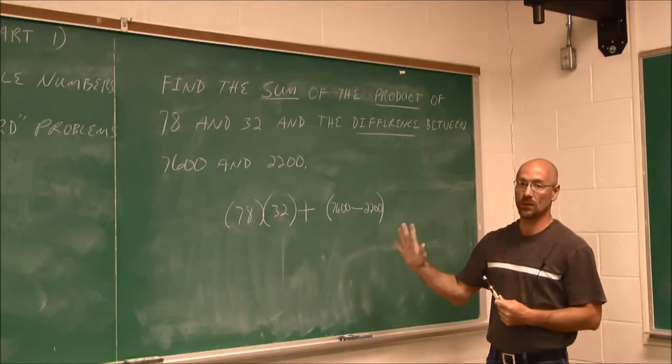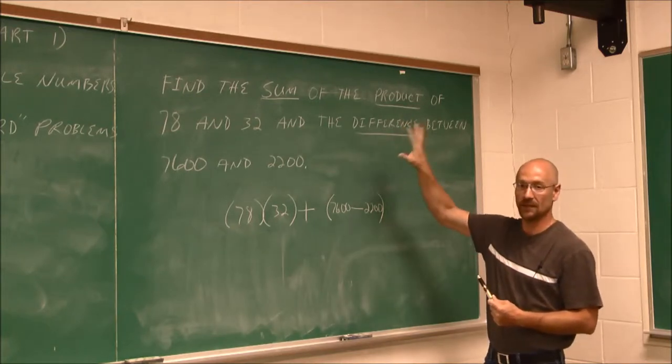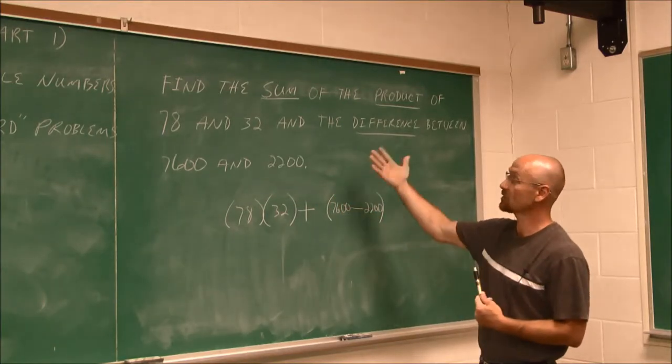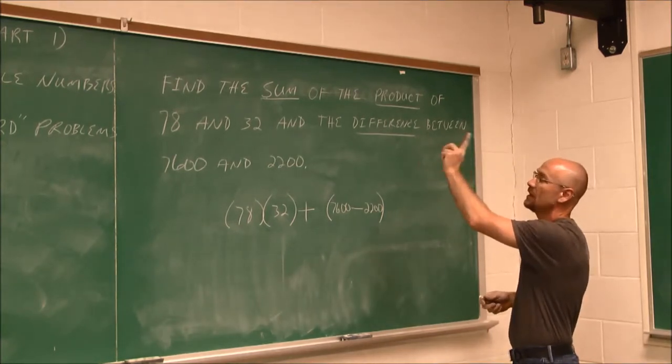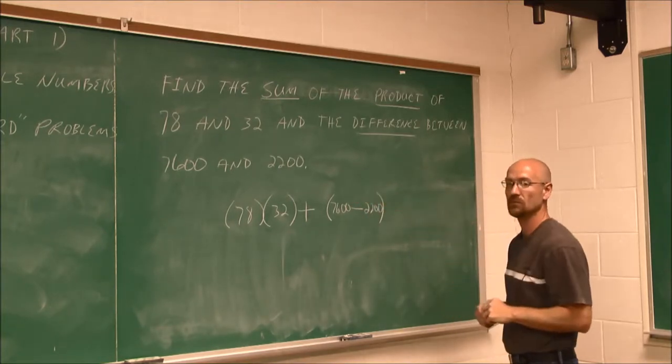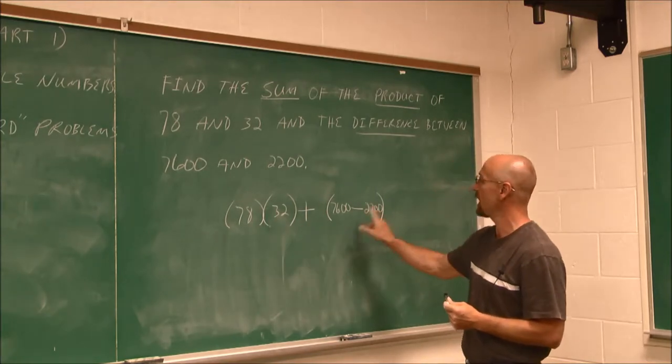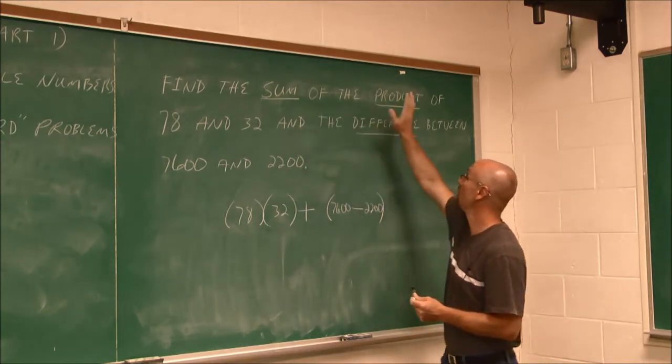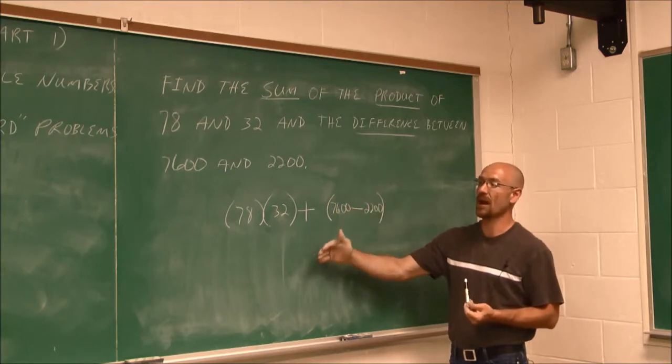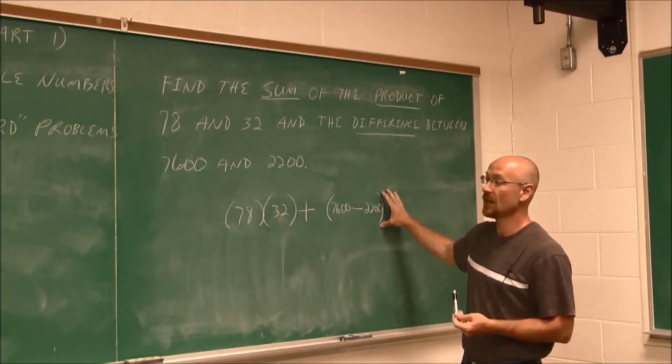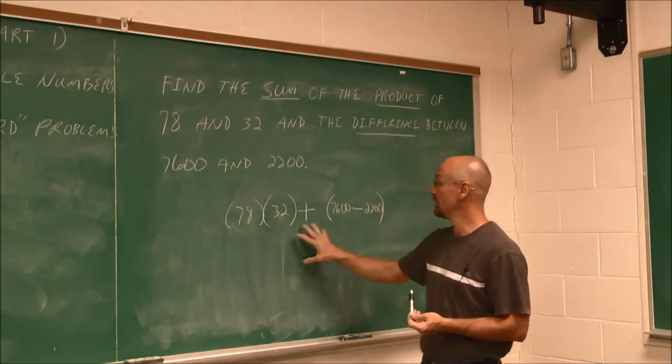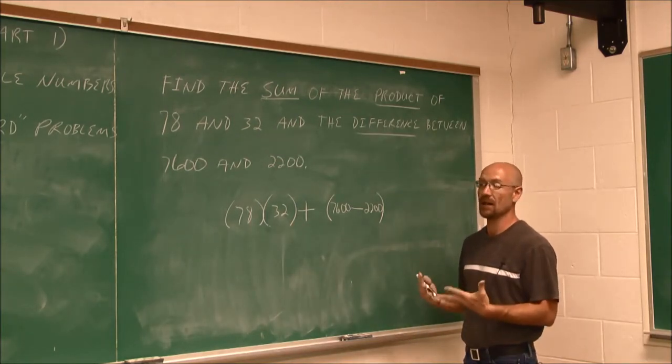So now I'm going to read it a third time to make sure that I was able to take this given information. And will it bring me to something that it's asking me to find? So I'm going to read it, it says, find the sum of the product of 78 and 32 and the difference between 7,600 and 2,200. So it's asking me to find the sum of this product and that difference. So I am on the right track. I know that I can simplify this. And just by taking this information for this particular example, it actually helped me build this expression. So now I can actually simplify it and find that answer.